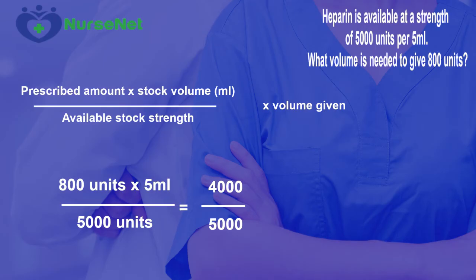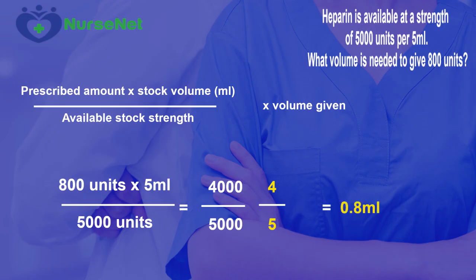Divided by 5,000. And again, employing the rule of looking for the highest common factor, we can find that each can be divided by 1,000. 4,000 divided by 1,000 gives us 4, and 5,000 divided by 1,000 gives us 5. So 4 divided by 5 gives us the answer of 0.8 millilitres.